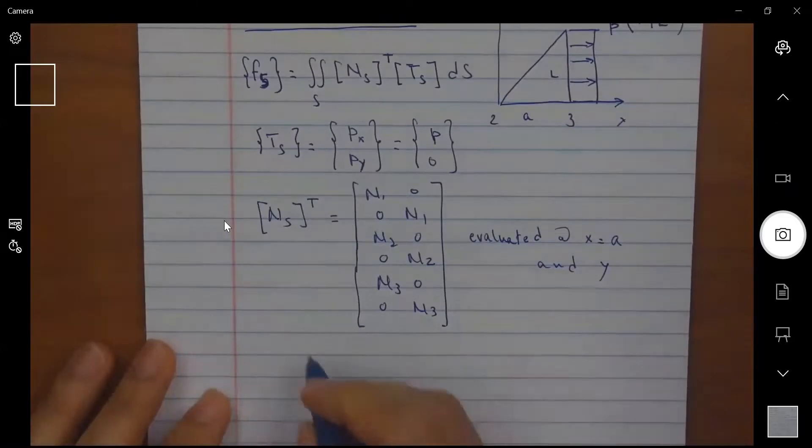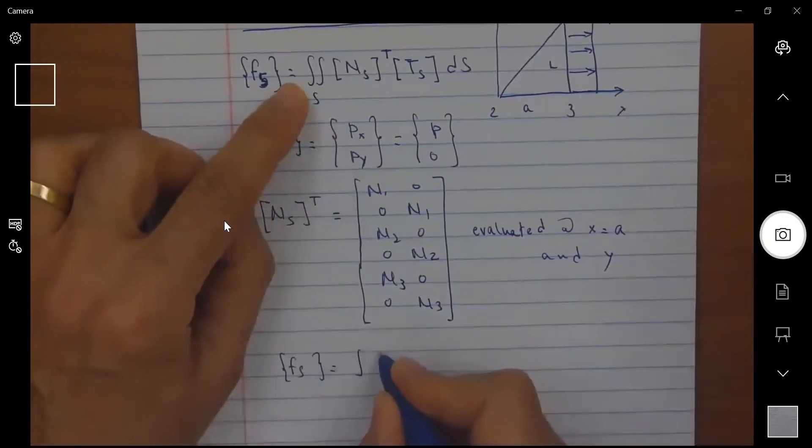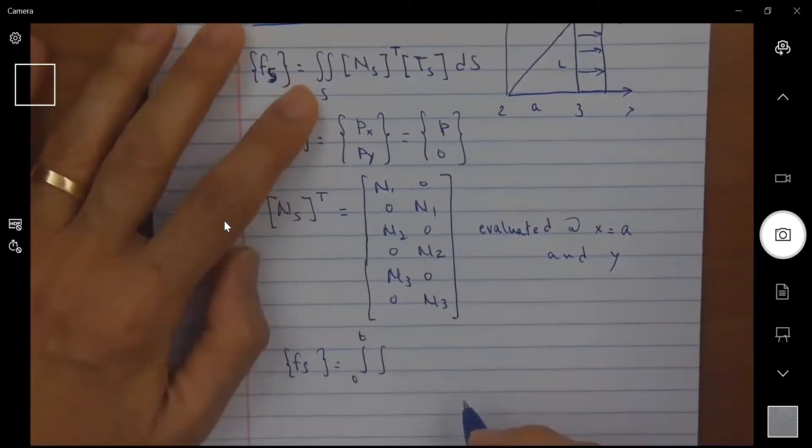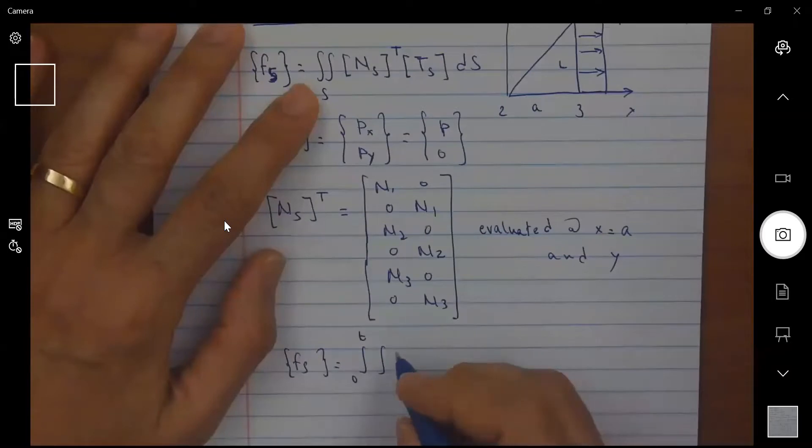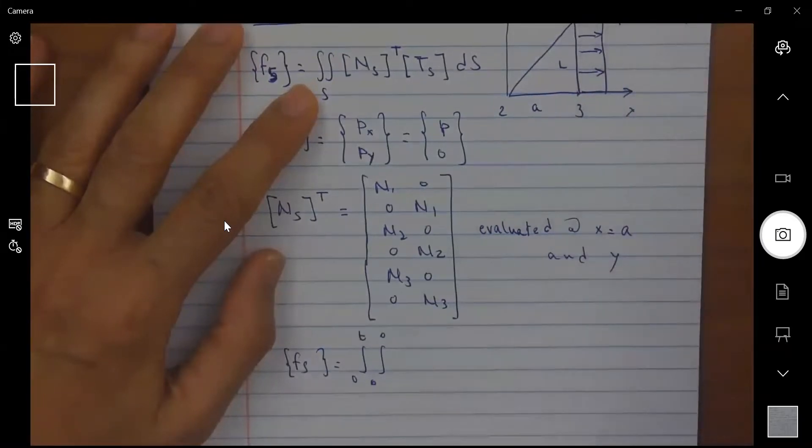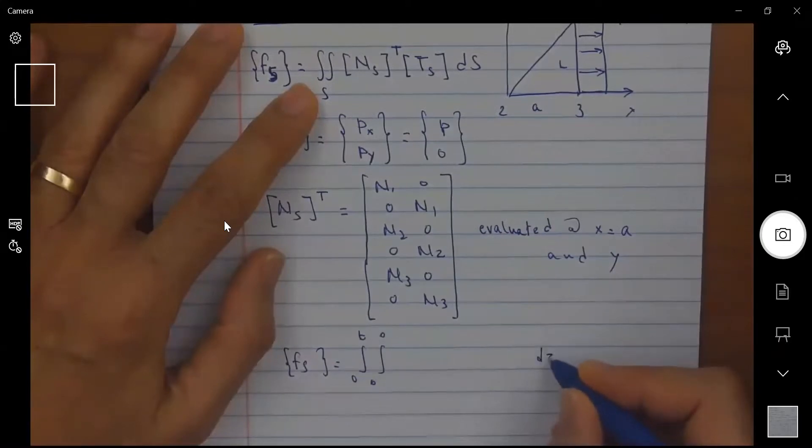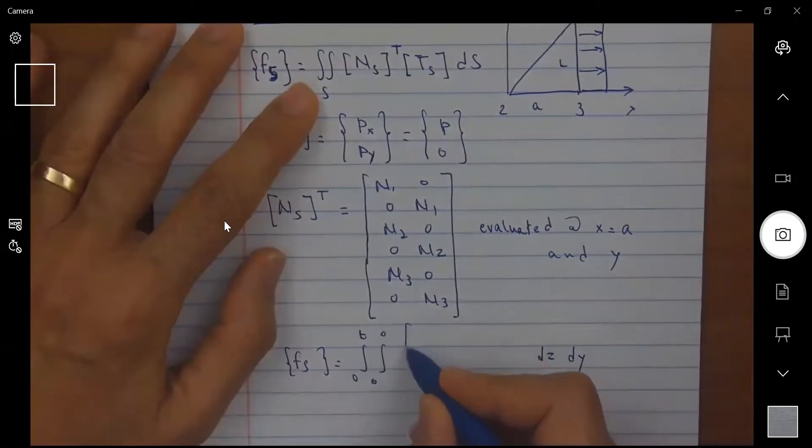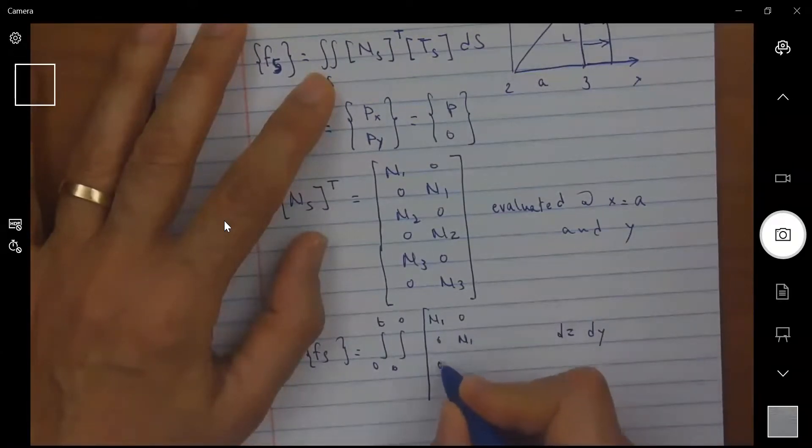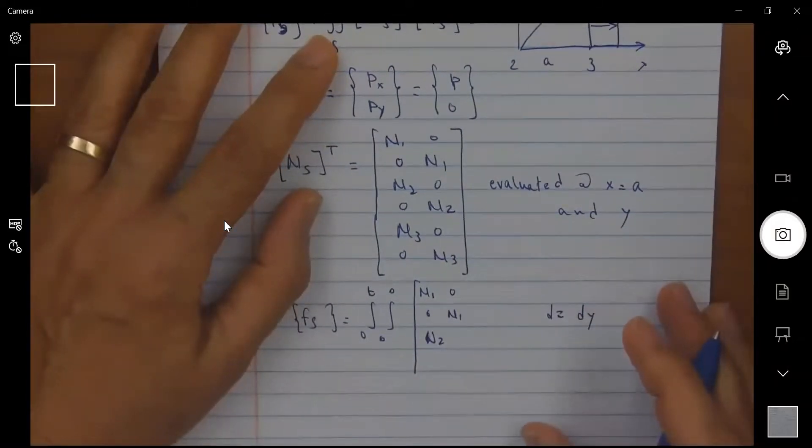So F S is equal to, now I'm integrating over the surface so I can go from zero to T and from zero to L. So my surface here has the area going from zero to L and over the thickness of it, so this would be from zero to T D Z and DY. And then I have my shape function matrix transposed. So I have N1 0 0 N1, sorry N2, so 0 to L.